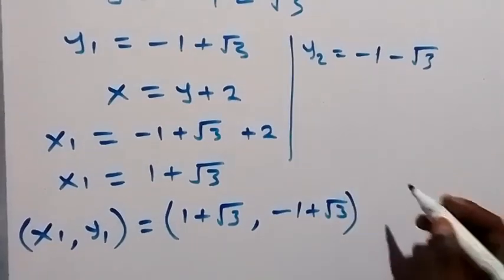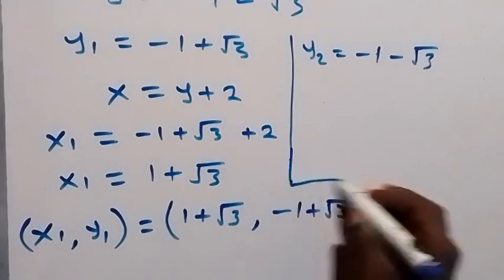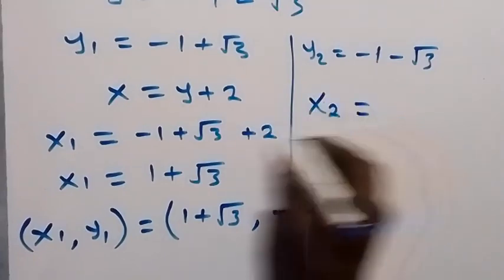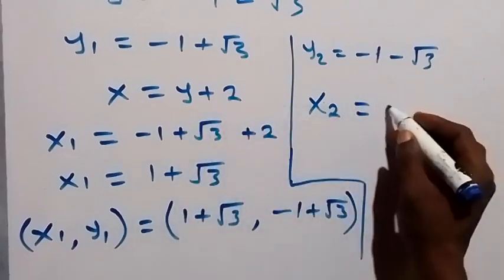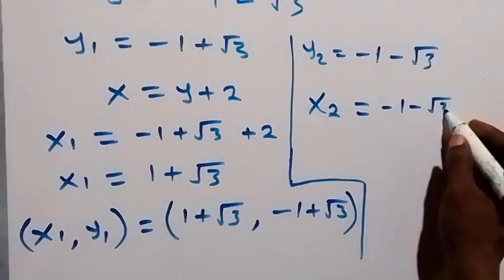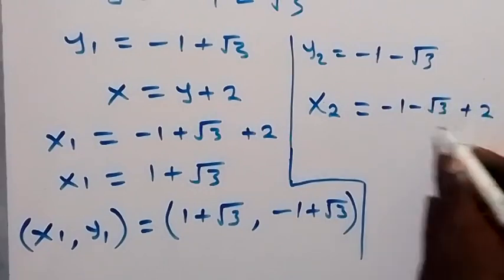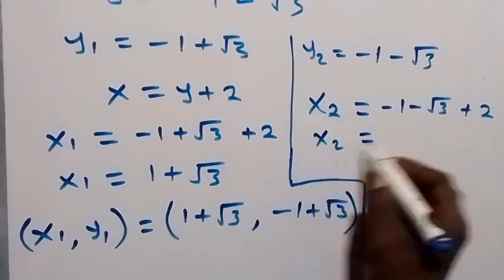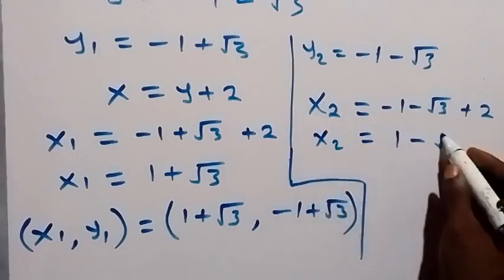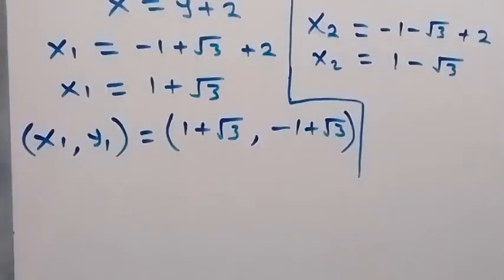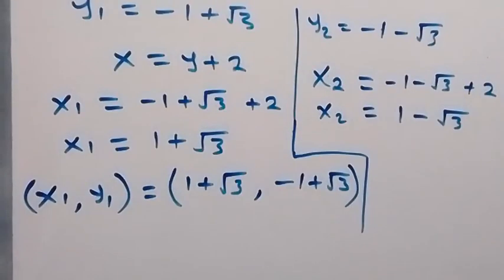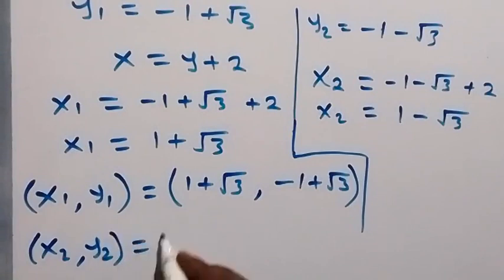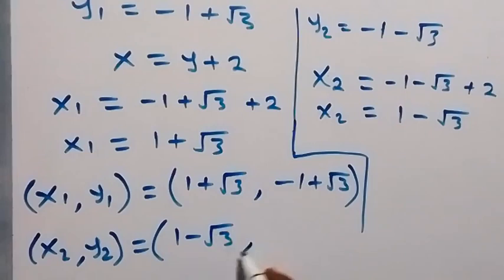We can also find x2 using the same relation: x2 equals y2 plus 2, which is minus 1 minus root 3 plus 2. The constants give 2 minus 1, that's 1, so x2 equals 1 minus root 3. The second solution set, x2 comma y2, is 1 minus root 3, comma, minus 1 minus root 3.